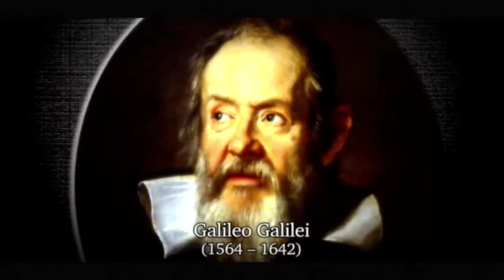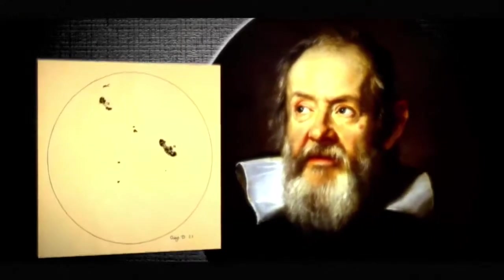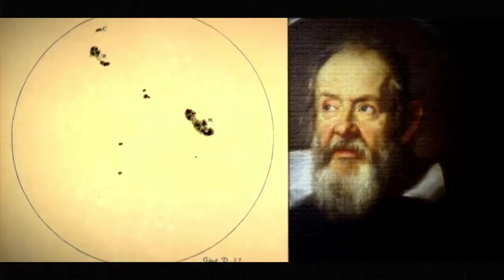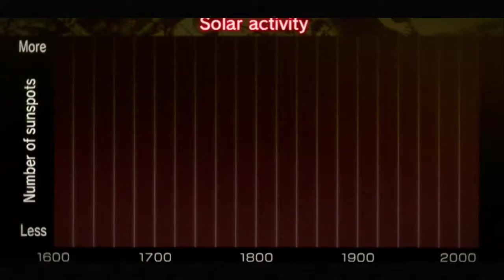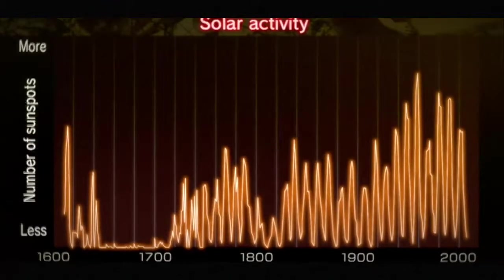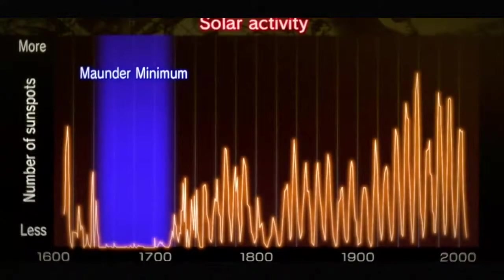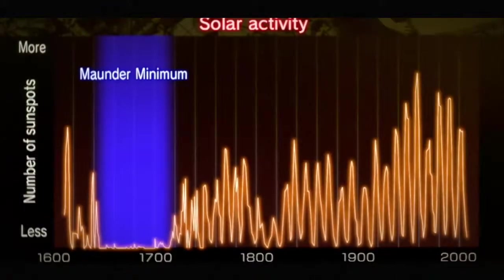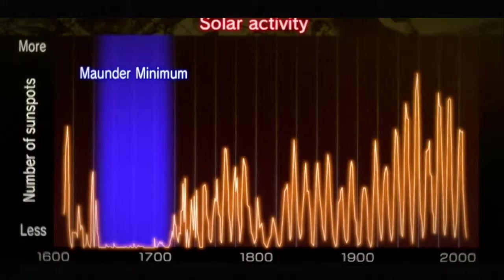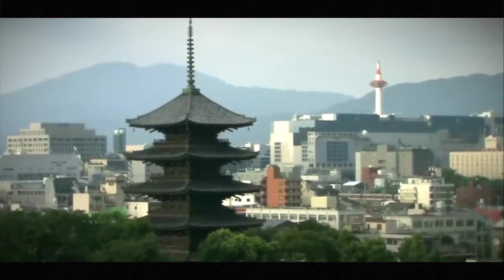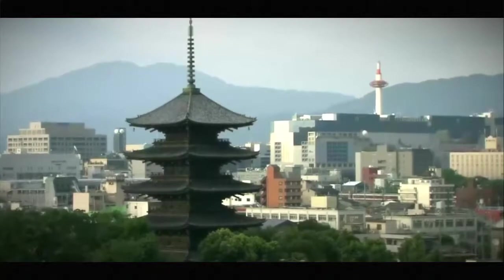The first person to ever record sunspots was Galileo Galilei. These are sunspots sketched by Galileo. In the 400 years since, the number of sunspots has continued to be observed. Looking at the records, there is a period of 70 years when there were no sunspots. This period is known as the Maunder Minimum, named after the man who made the discovery. How did this period of no sunspots and low solar activity affect life on Earth? It is impossible to know at first hand how things were at the time, but clues can be found in an unexpected place.